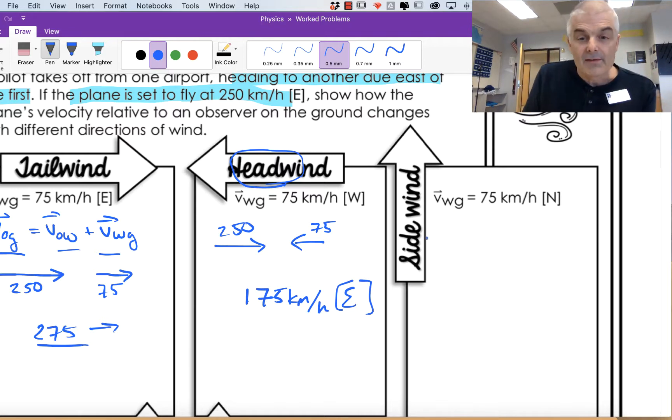Now what about if we have a sidewind? This is the more complex problem. So I'm going 250, and this is to the north. The wind is pushing me up at 75. Now do you see how this is that resultant vector thing? If I draw the arrow here, the actual direction will be different. So what's the actual speed?